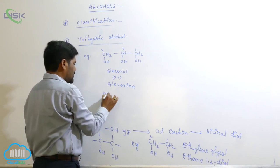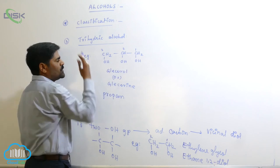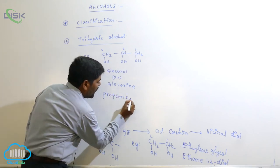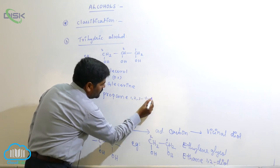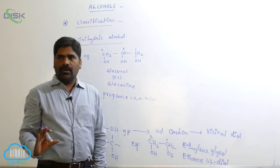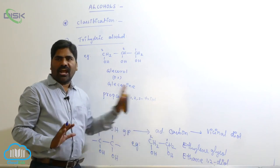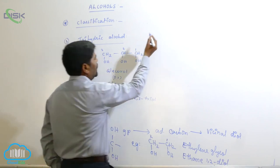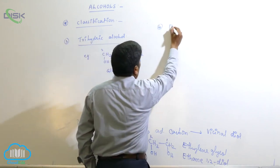The IUPAC name of glycerol: the root word is 'prop' since it has three carbons and is a saturated system, giving propane. The OH groups are on carbons one, two, and three, so the IUPAC name is propane-1,2,3-triol. One OH is a monoalcohol, two OH is a diol, and three OH is a triol.